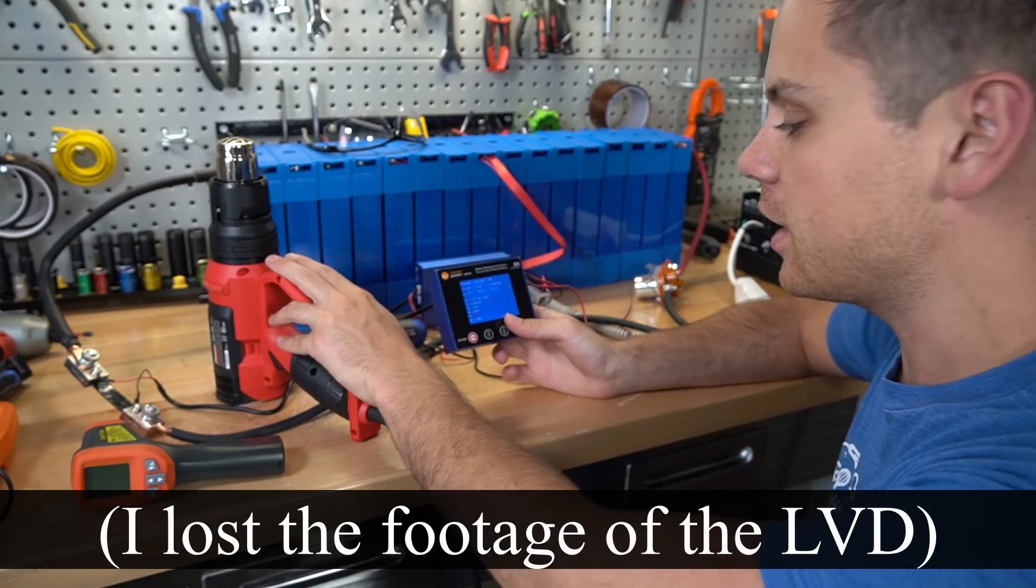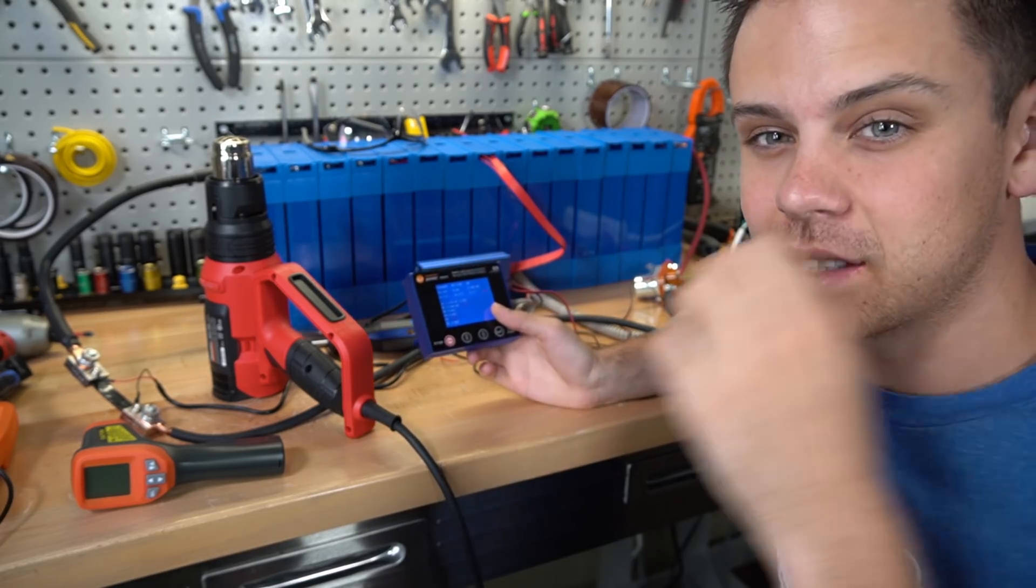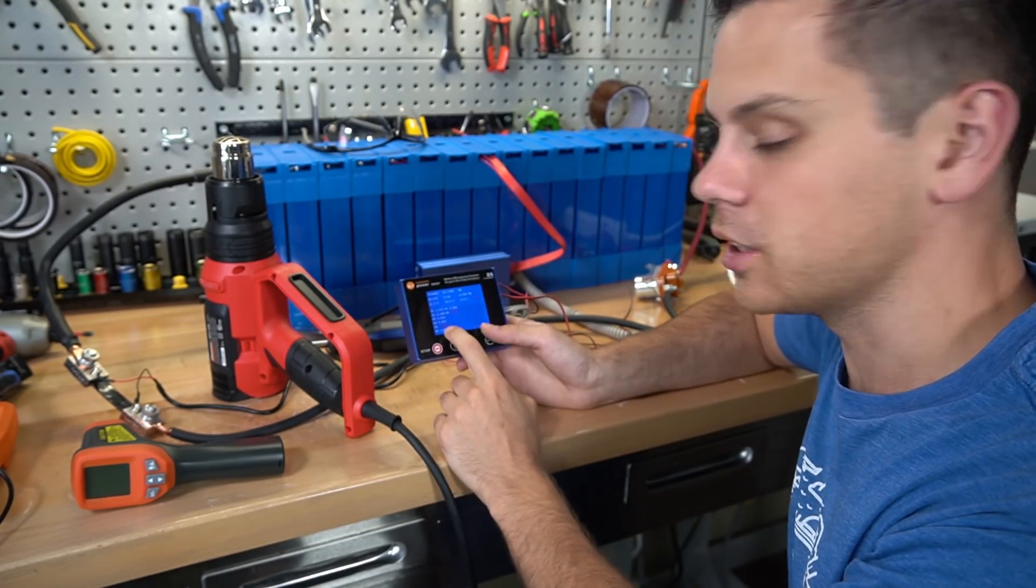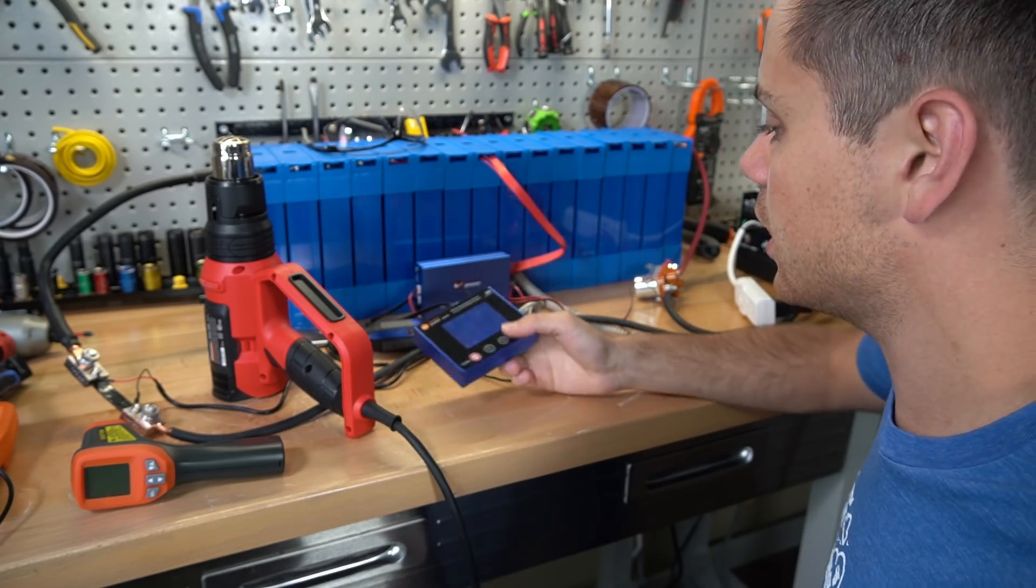And it turned off the inverter and the load. Right now the voltage is recovering. I set it for 2.65 and it's recovered all the way up to 2.8. But yeah it actually works. Now let's try charging it up.